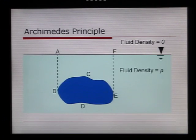So what exactly does that mean? Well, let's take a look at this submerged object. It's just a blue object that's submerged there, and we have points around that object defined as A, B, D, E, C, and F. It's submerged in a fluid of density rho, and we're assuming that the external fluid, the white fluid, has a density equal to zero.